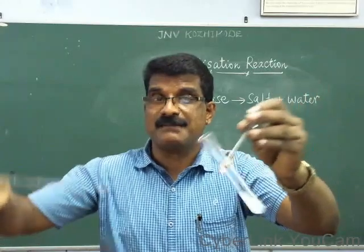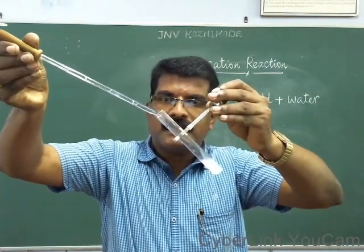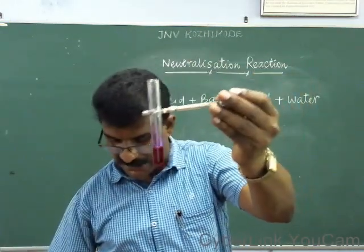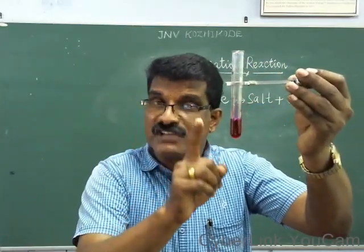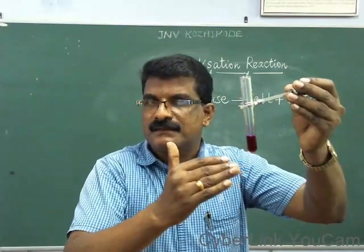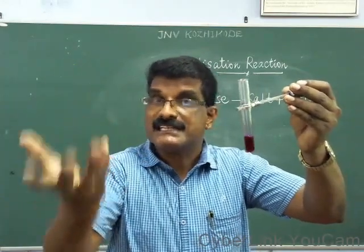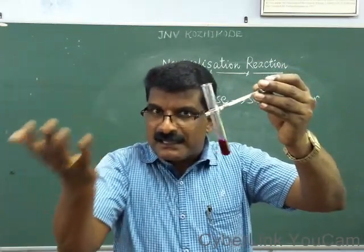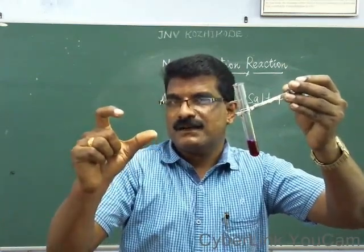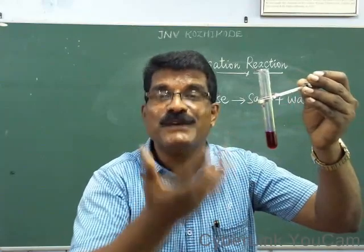The basic properties are cancelled by the hydrochloric acid taken in the test tube. Now I am again adding sodium hydroxide very slowly, drop by drop. Now it is completely changed into pink. Why? Because earlier it was acidic — that time the phenolphthalein indicator did not show color, because it is a basic indicator. But once I added more base, the solution became basic. The base cancelled the effect of acid, and since it is basic, it is showing pink color.